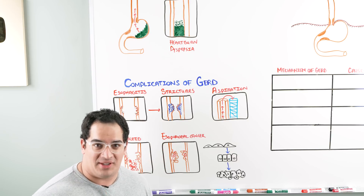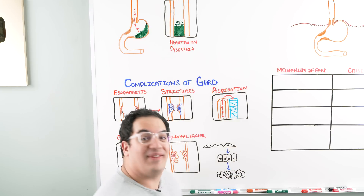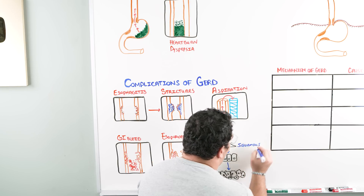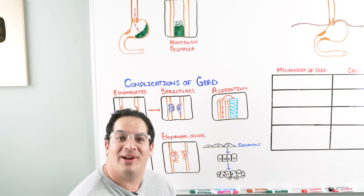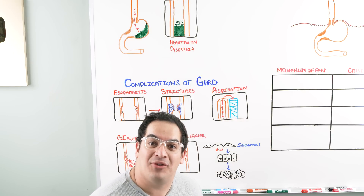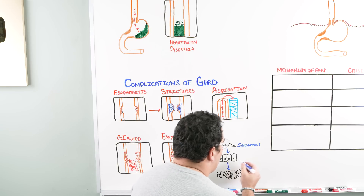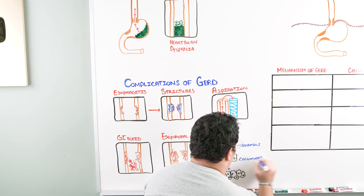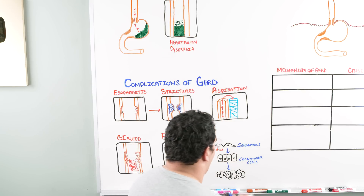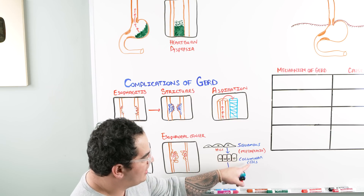An important pathophysiology concept: normal esophageal cells are stratified squamous. But when you expose squamous cells over a long period of time to a lot of hydrochloric acid, they have to adapt — they undergo metaplasia, changing into columnar cells. This process of going from squamous to columnar cells is called metaplasia.